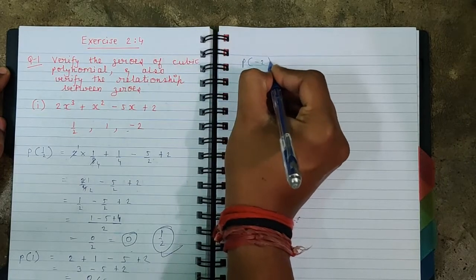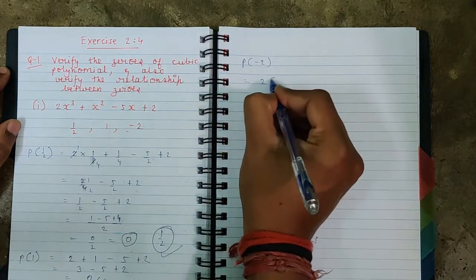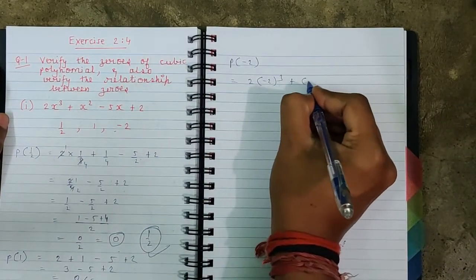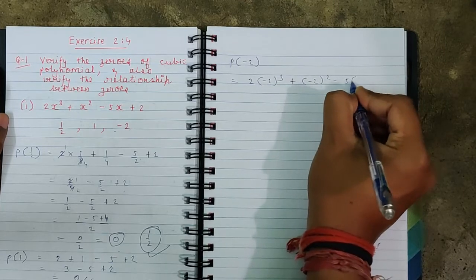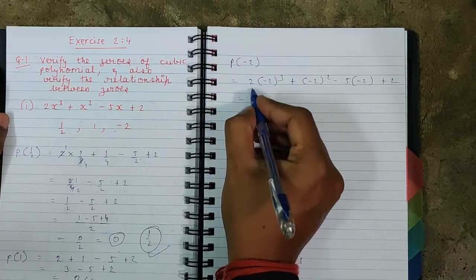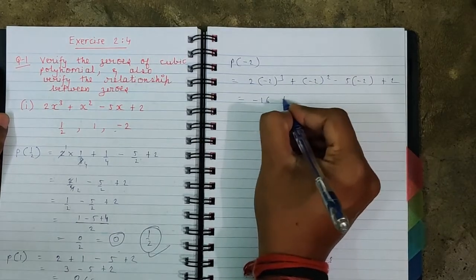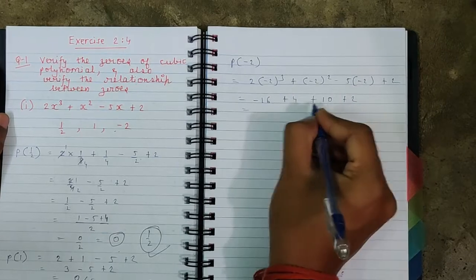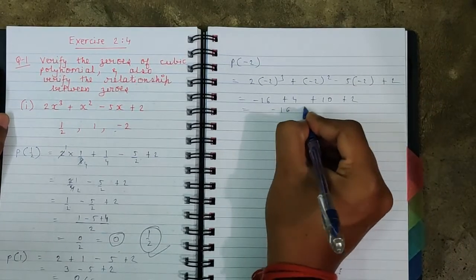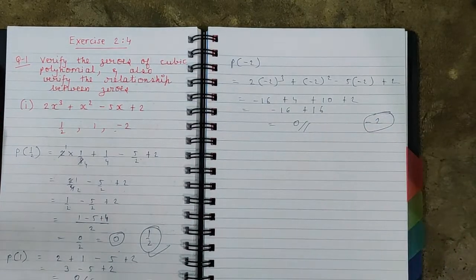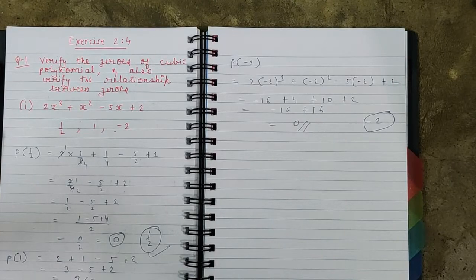Now let's verify for the third one: p(−2). Two into (−2)³ plus (−2)² minus five into (−2) plus two. (−2)³ is −8, so 2×(−8) = −16; (−2)² = 4; minus(−2×5) = +10; plus two. So: −16 + 4 + 10 + 2 = 0. Therefore minus two is also a correct zero of this polynomial. We have now verified all three numbers are zeros of the polynomial.